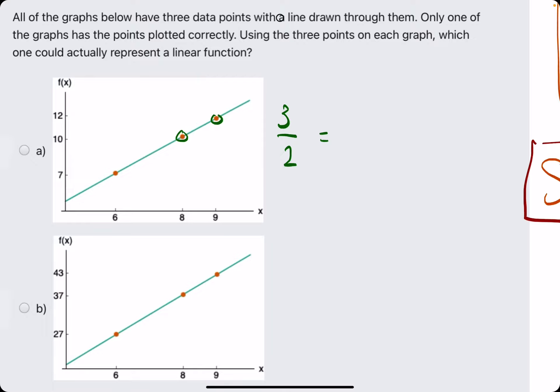So from here to here, we have a rise from 10 to 12 of 2 and a run from 8 to 9 of 1. 3 over 2 and 2 over 1. 3 over 2 is not equal to 2 over 1.